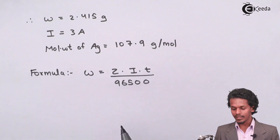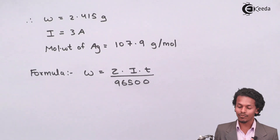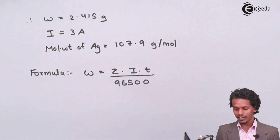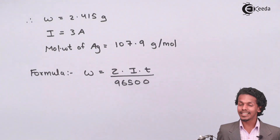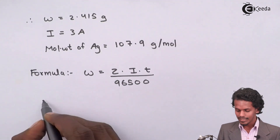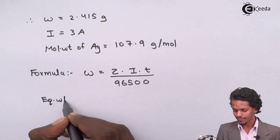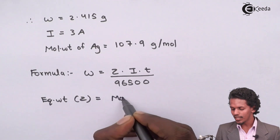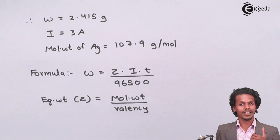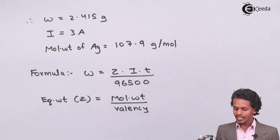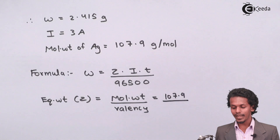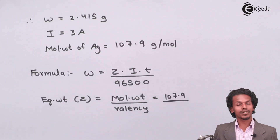The weight W is given, I is given, and T is what we need to find. 96500 is already in the formula. However, we don't yet have the value of Z. Z, the electrochemical equivalent, is calculated as molecular weight divided by the valency of the metal in its ionic form. The molecular weight of Ag is 107.9.